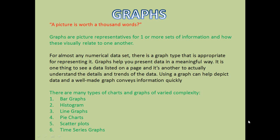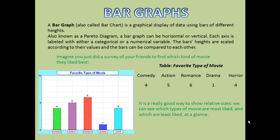The six types are: bar graph, histogram, line graphs, pie charts, scatter plots, and time series graphs. Bar graphs are also known as bar charts. It is a graphical display of data using bars of different heights, also known as pareto diagrams. A bar graph can be horizontal or vertical, and each axis is labelled with either a categorical or a numerical variable.